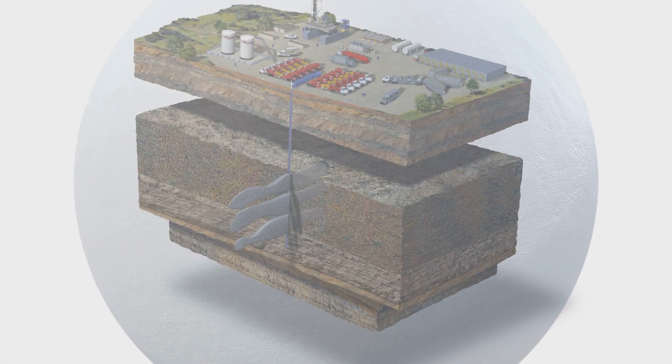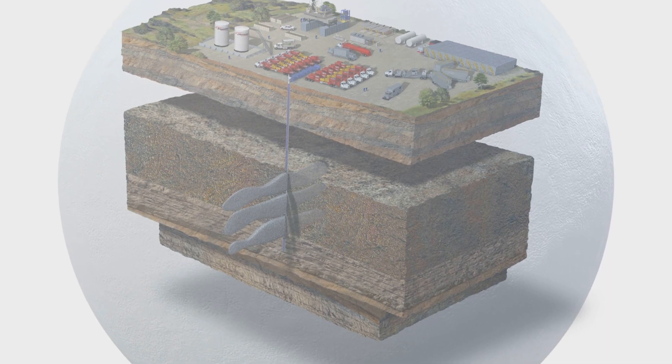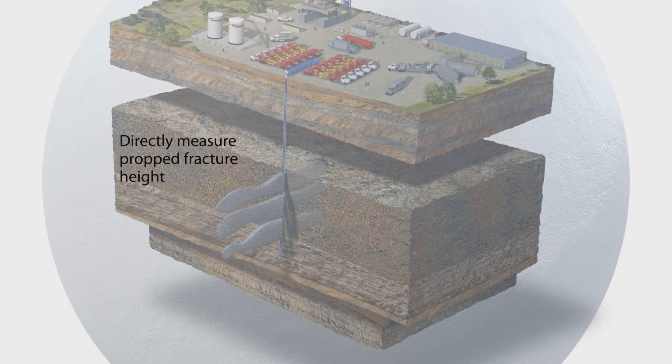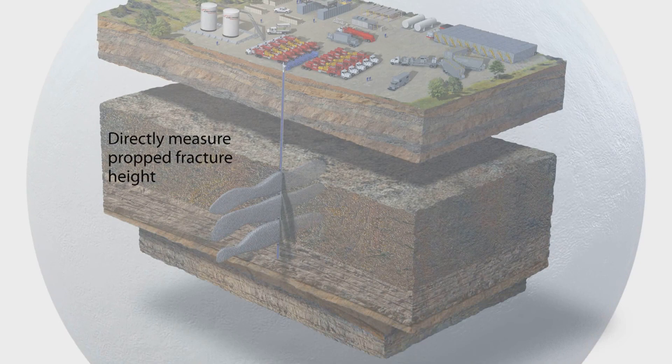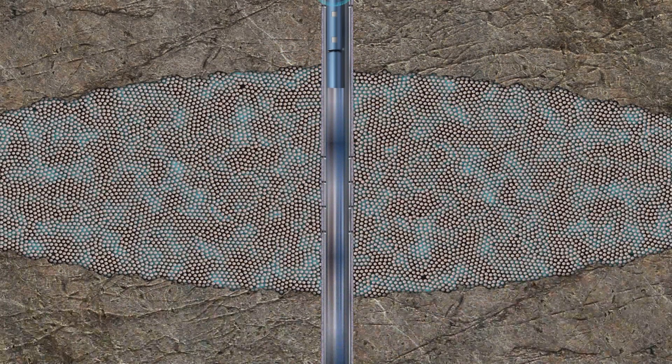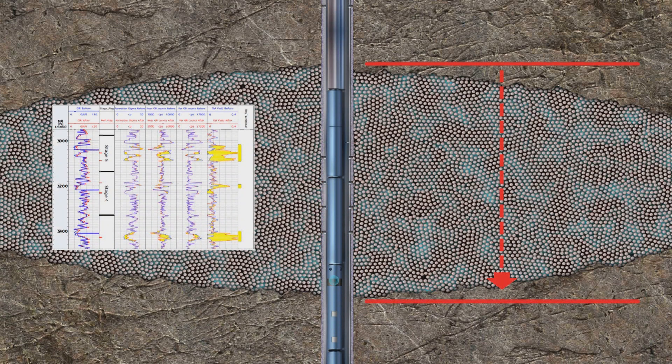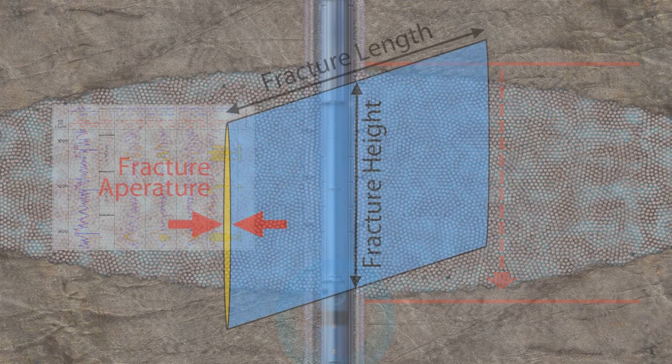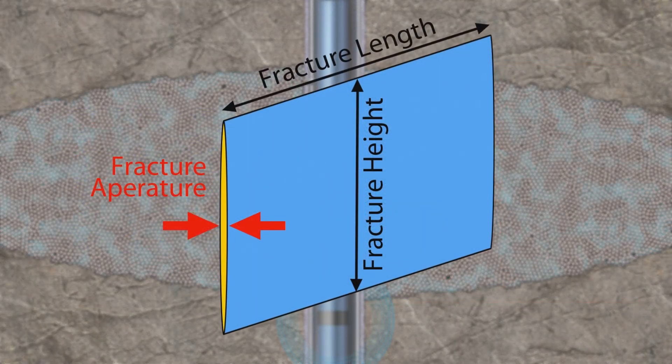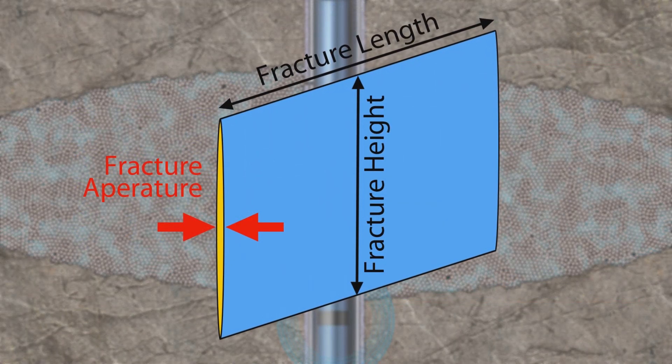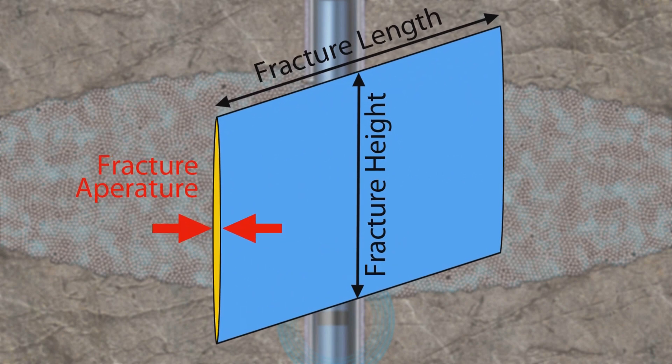In vertical wells, detecting the precise location of propant provides a direct measurement of propped fracture height. The accurate propped fracture height measurements can then be used to calibrate fracture geometry models and optimize treatments of offset wells. The propped fracture height and approximations for fracture width allow the calculation of fracture length using the mass balance technique.